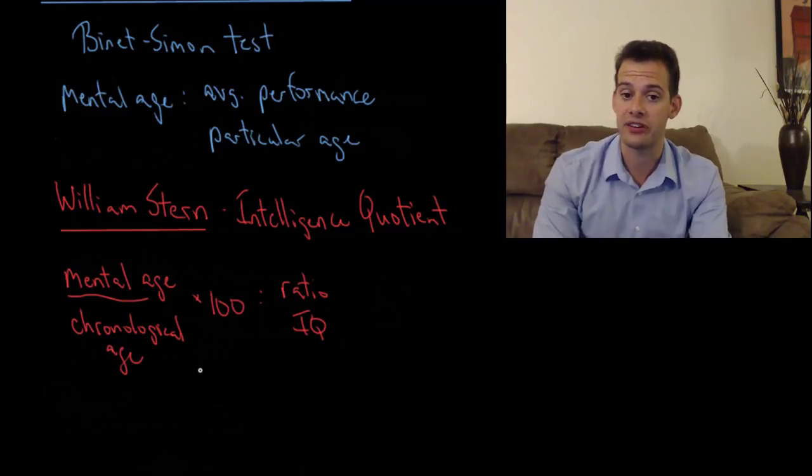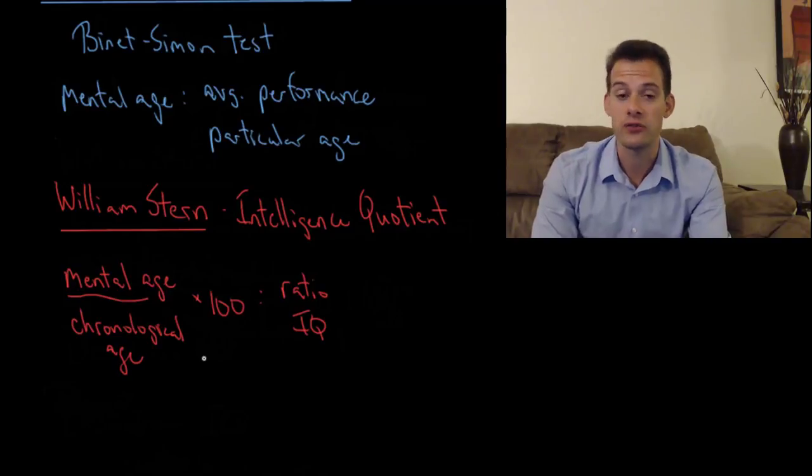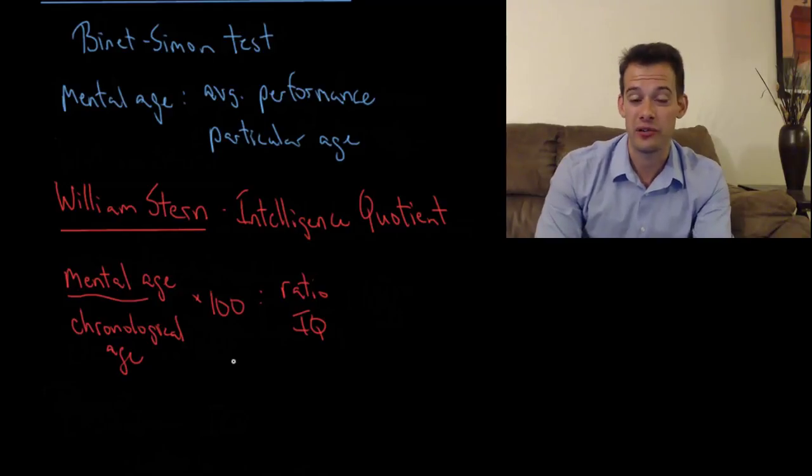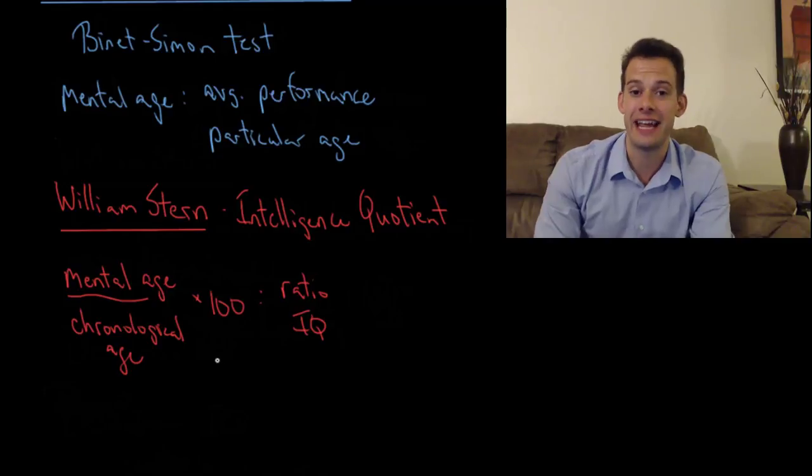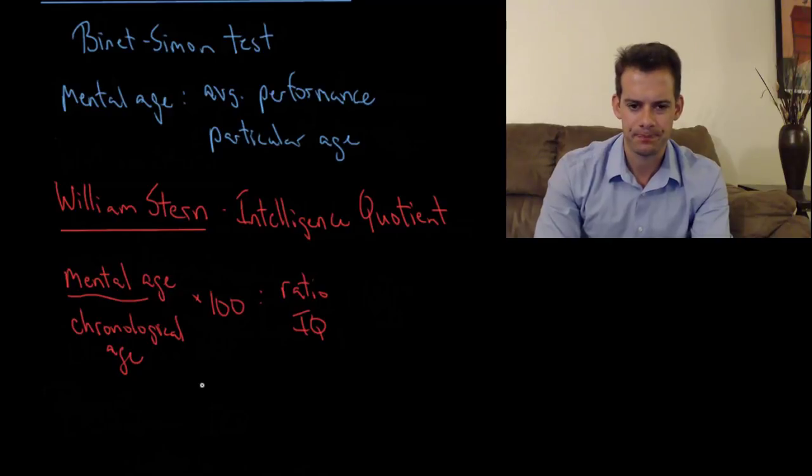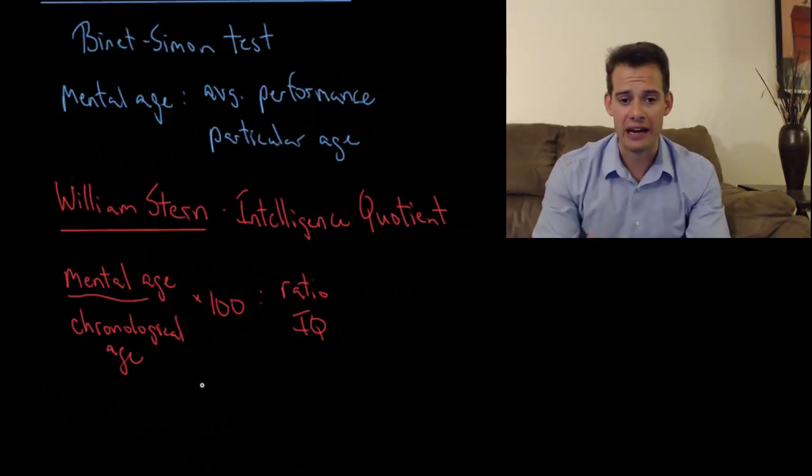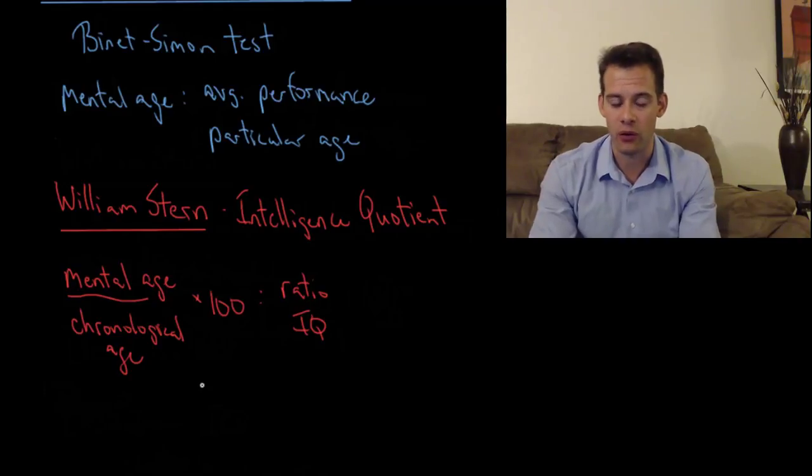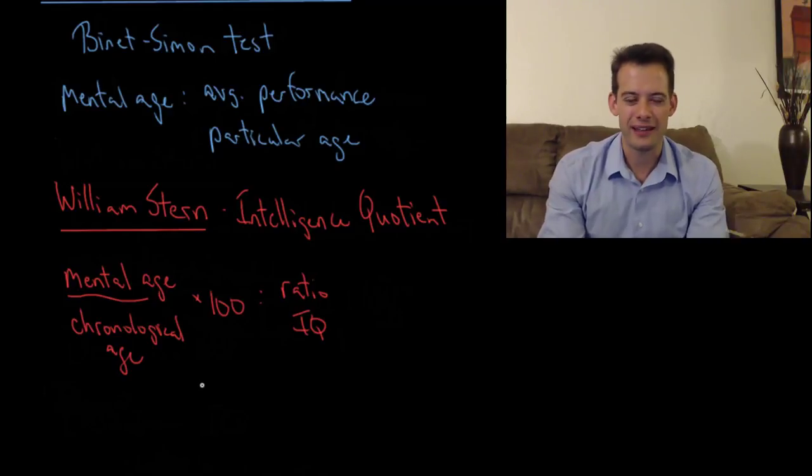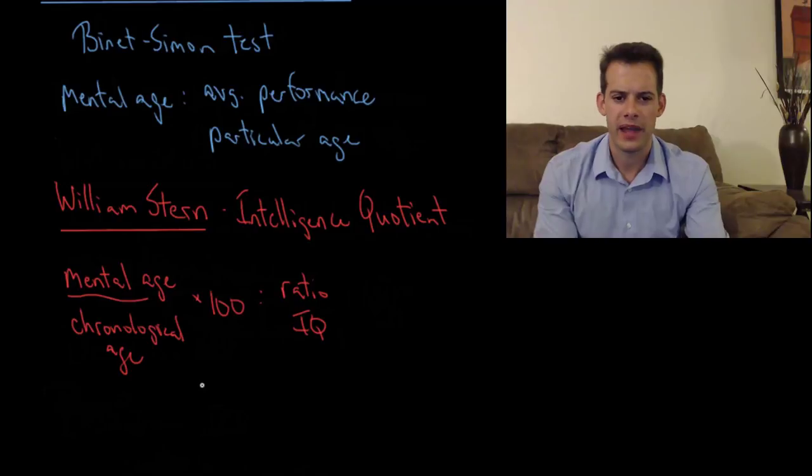Now this works pretty well for assessing children. The problem is it doesn't work very well once we get out of childhood. Because the idea of mental age doesn't work so well beyond a certain point. So what's the difference in mental age between an eighteen-year-old and a nineteen-year-old? Or a twenty-nine-year-old and a twenty-eight-year-old? Or a fifty-eight-year-old? At that point, it's very difficult to compare things by mental age. And so we have this problem where chronological age keeps increasing every year. As you get older, your chronological age is getting larger and larger, but the concept of mental age isn't working very well to compare. And so this is why ratio IQ is not calculated much anymore.